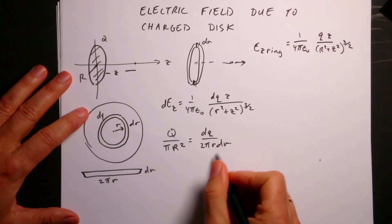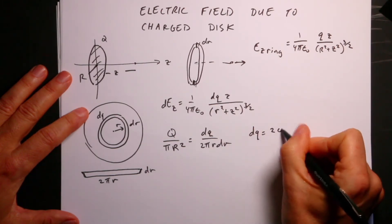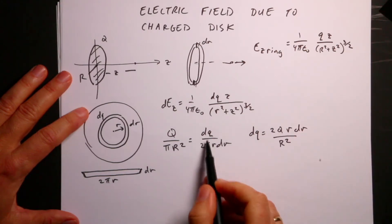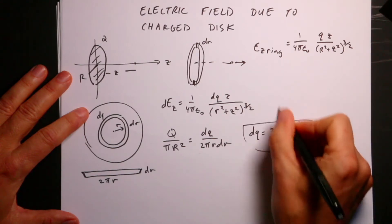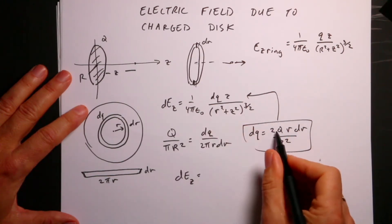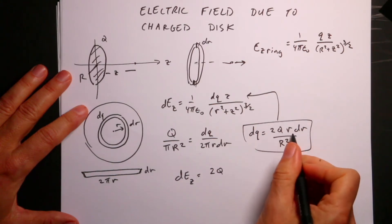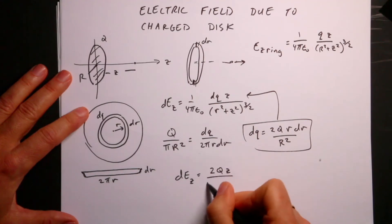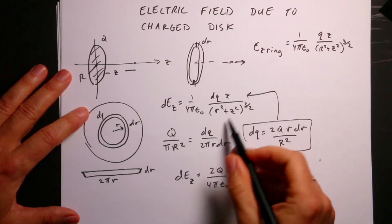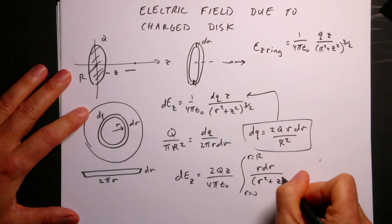That has units of area because of r times dr. If I solve this for DQ, I get DQ equals 2Q·r·dr over R squared — the π's cancel. Now I can put that into the expression for dE_z and bring all the constants out front. I get the integral from r equals zero to r equals R of r·dr over (r squared plus Z squared) to the three halves.